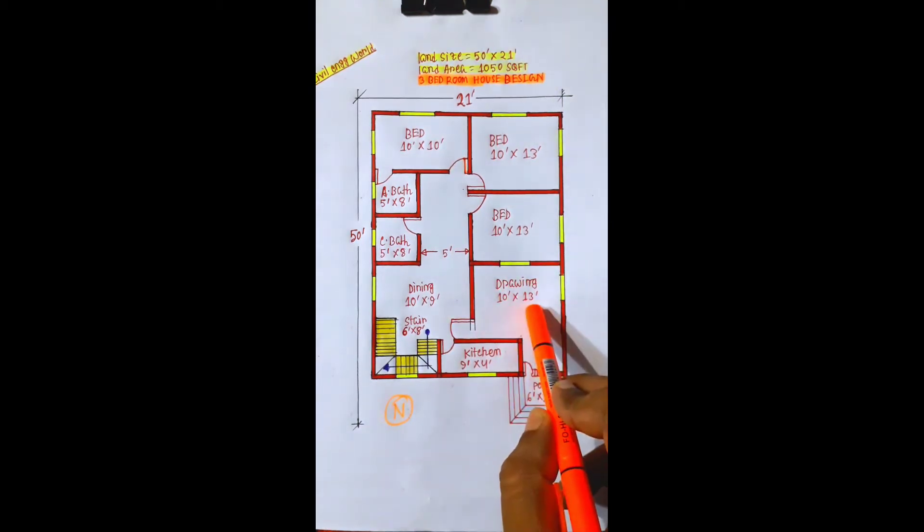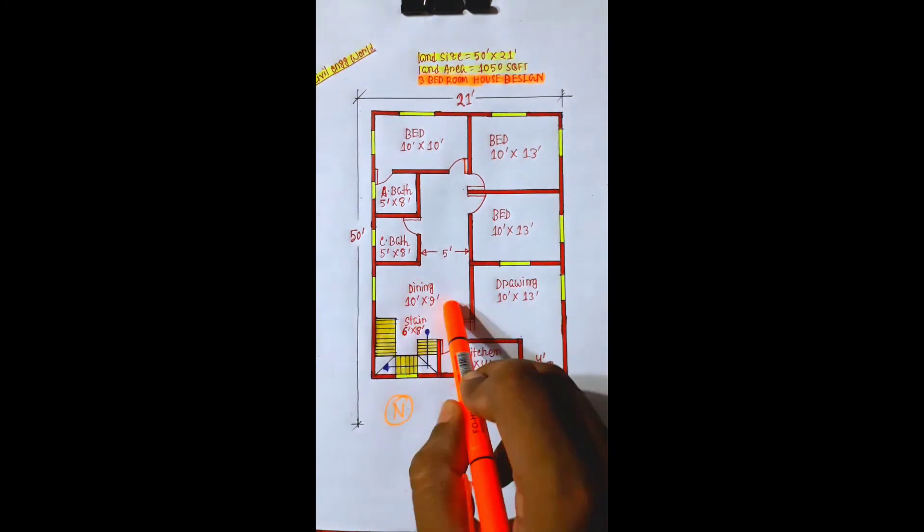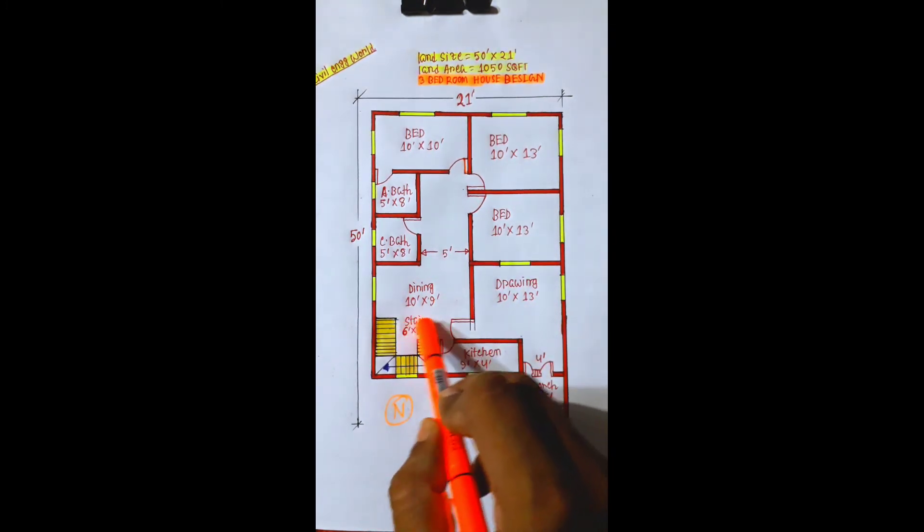This is the dining space, 10 feet by 9 feet. This is the stair, 10 feet by 8 feet.